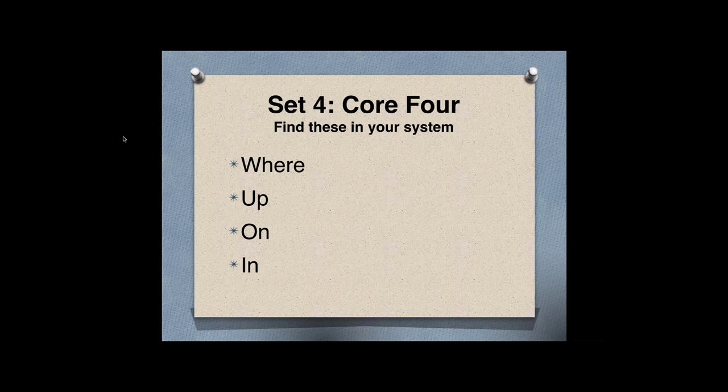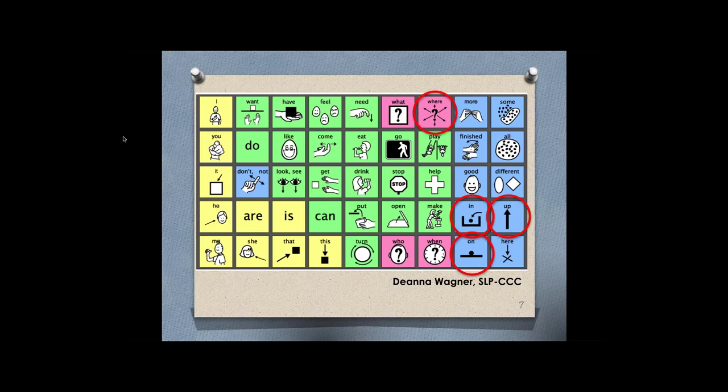Take a minute to find the words where, up, on, and in in your system. POD users will have some specific support in a moment as some of these take more navigation to find. If you don't have a communication system yet, you might be using Deanna Wagoner's Core Plus 5 — she took the DLM's top 40 and added five more words. This display has been shared in the Angelman Syndrome Foundation communication training series group on Facebook and can be downloaded as a great starting place to follow the series and develop the habit of modeling.